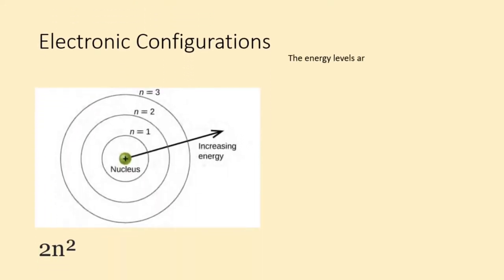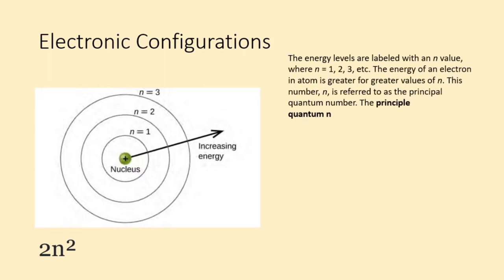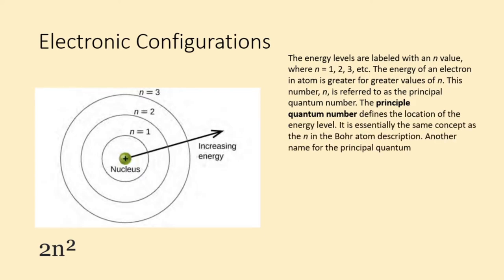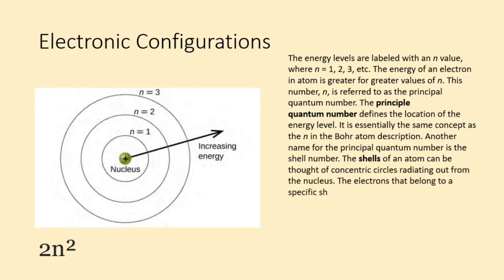The energy levels are labeled with an n value, where n equals 1, 2, 3, etc. The energy of an electron in an atom is greater for greater values of n. This number n is referred to as the principal quantum number. The principal quantum number defines the location of the energy level.